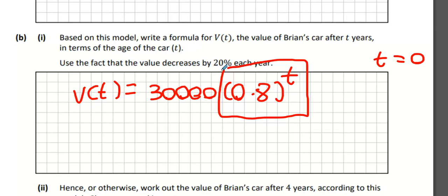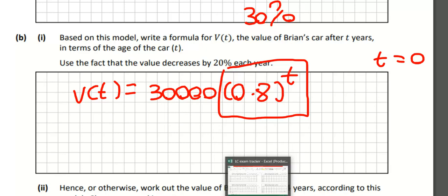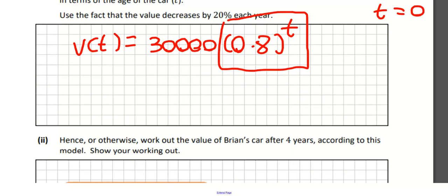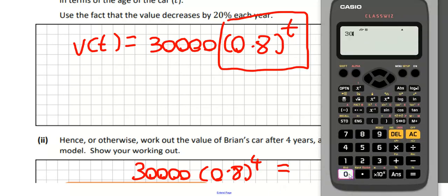If I was losing 30% the formula would use 0.7 instead of 0.8. If it was an investment gaining 20% per year, it would use 1.2. To find the value after four years, put in 0.8 to the power of four. Alternatively, just keep taking away 20% for four years to get the same answer: 12,288.